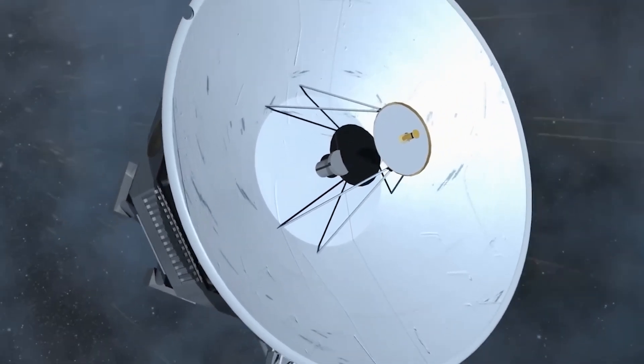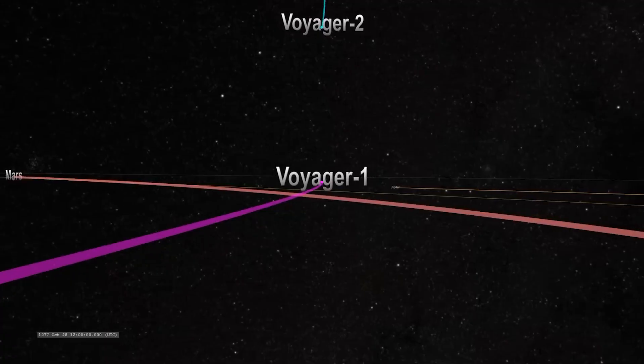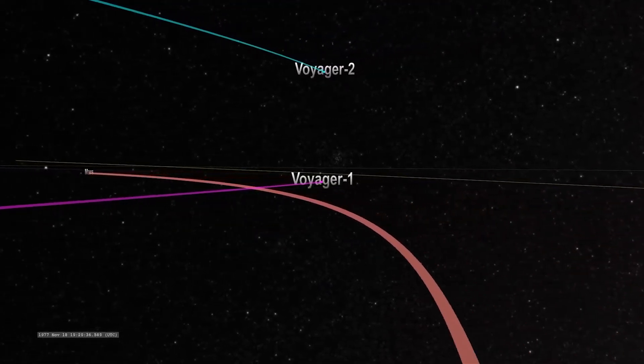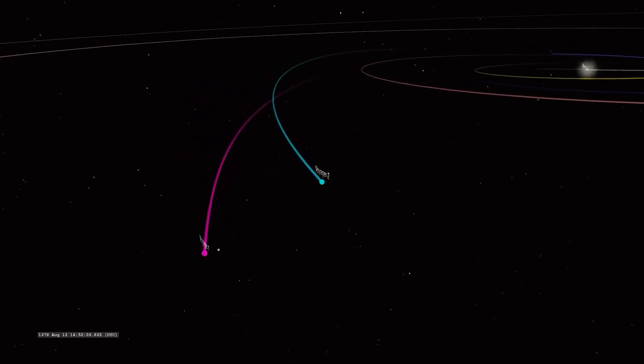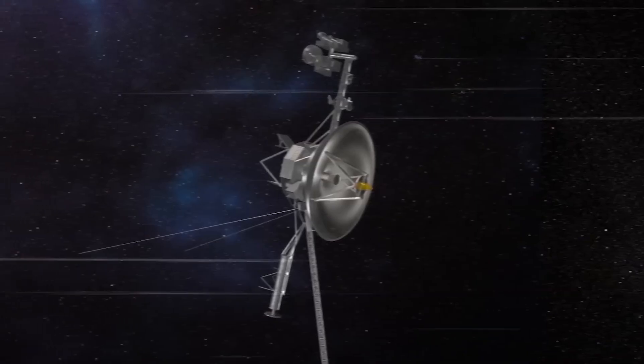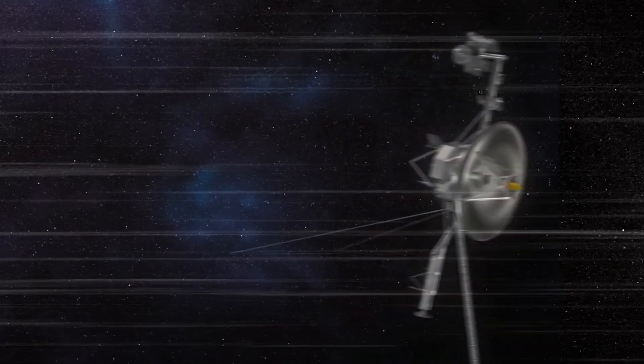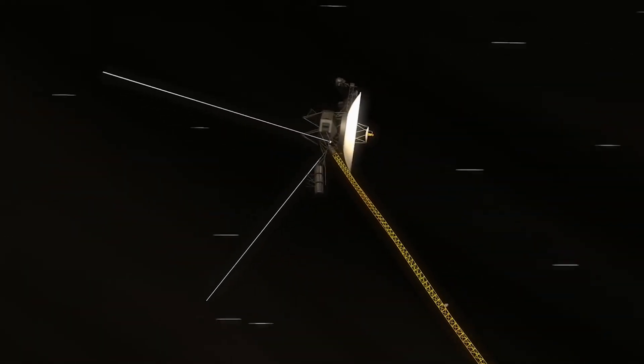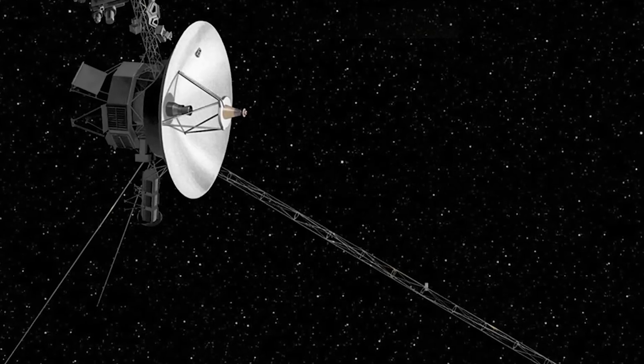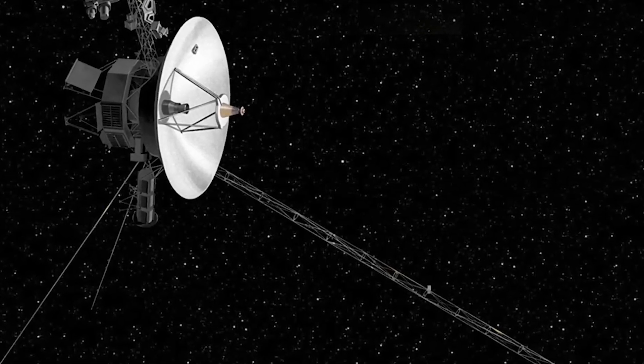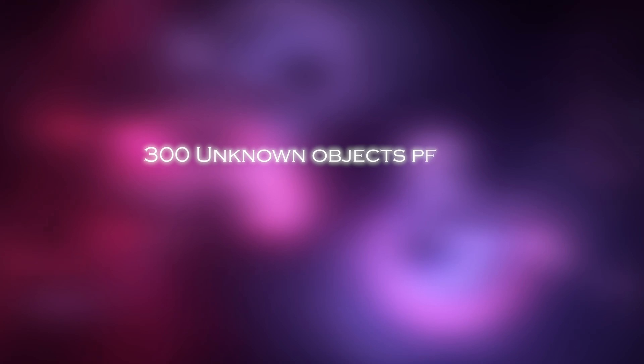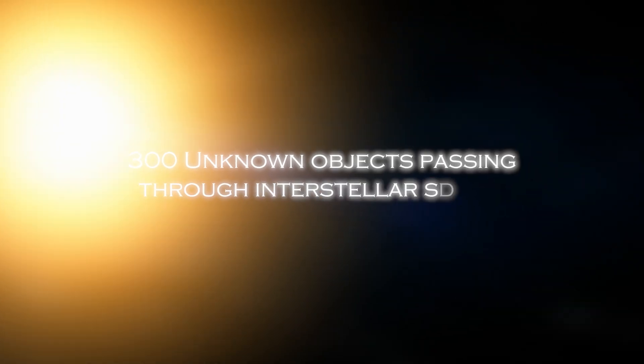However, communication with Voyager 1 has become more difficult due to the limited resources NASA's global antenna system has to receive the mission signals. This has resulted in less frequent communication opportunities than they used to be. Despite this, a fascinating discovery recently emerged in the data stream. Voyager 1 detected an intriguing anomaly, the presence of 300 unknown objects passing through interstellar space.